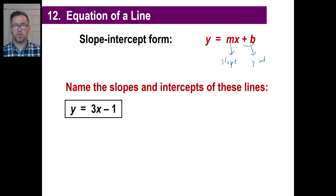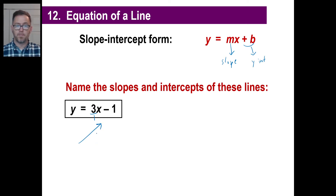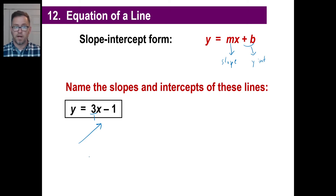Look at this first. What's the slope of this line? What fraction is it? It's three — or in other words, three over one. So you would go, the line is going like this. It's positive, so it looks like this. You could go up three and then over to the right, or you could go down three and then over to the left.